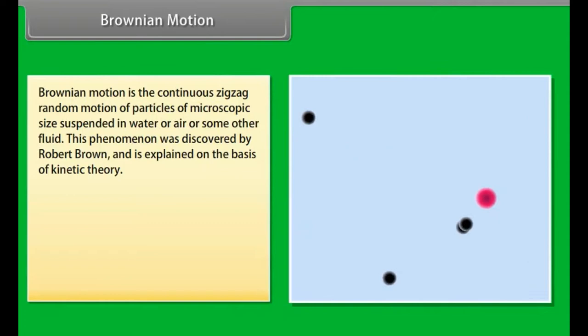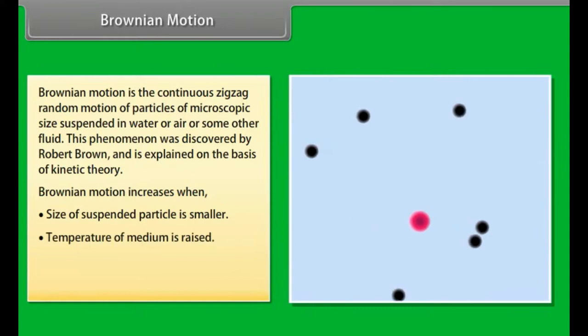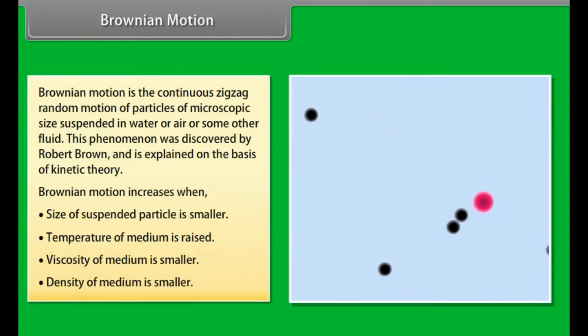Brownian motion is the continuous zigzag random motion of particles of microscopic size suspended in water or air or some other fluid. This phenomenon was discovered by Robert Brown and is explained on the basis of kinetic theory. Brownian motion increases when size of suspended particle is smaller, temperature of medium is raised, viscosity of medium is smaller, and density of medium is smaller.